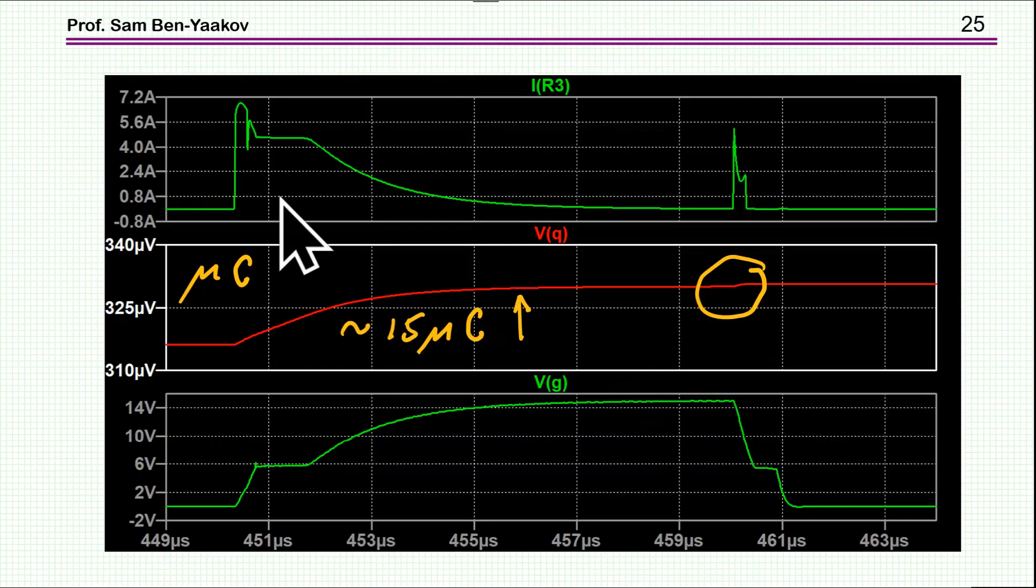And here is what I'm getting. Here again, the current, this is the current, this is the extra current due to this configuration. Now, the main charge here is 15 microcoulombs, this is not surprising, because we have a one microfarad equivalent capacitance, and we have 15 volts, so it's a 15 microcoulomb charge to the main gate capacitance.